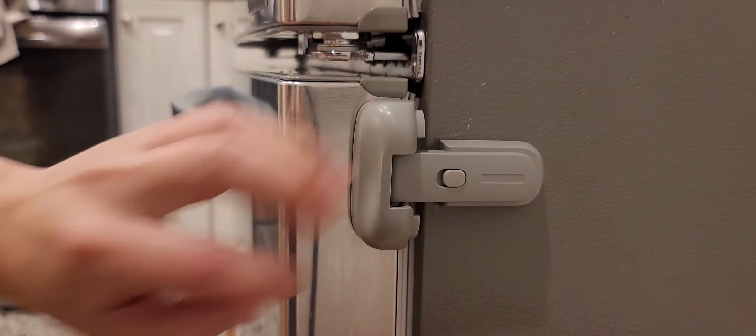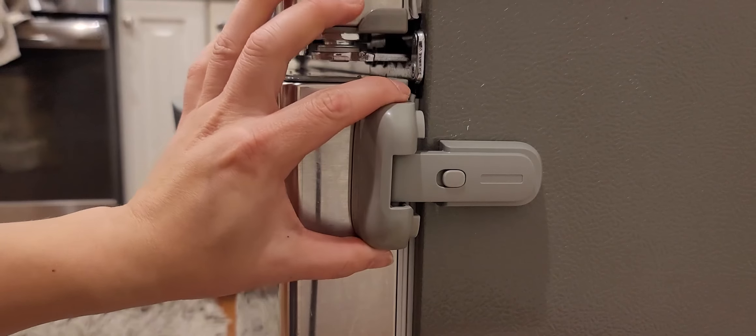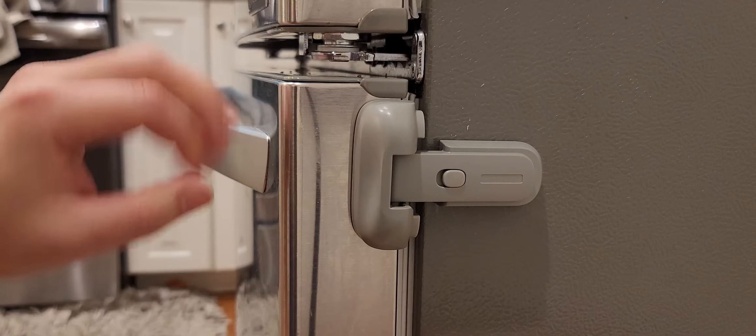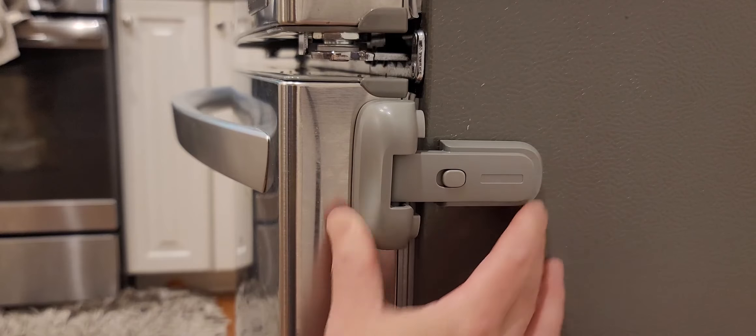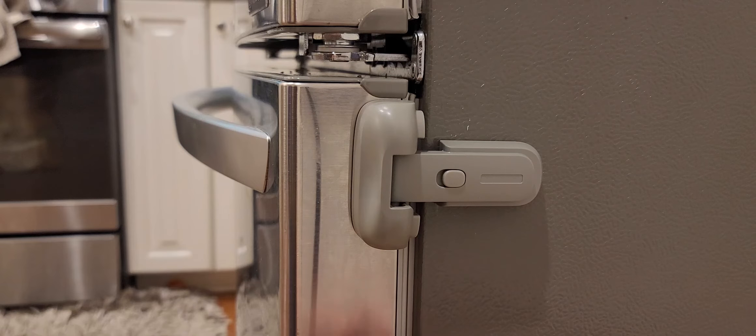But I have used other child locks before, refrigerator door locks. They were more cumbersome and didn't work as well as this one. And also this one matches the color of my refrigerator, which is stainless steel and gray. I believe they have it in white as well.